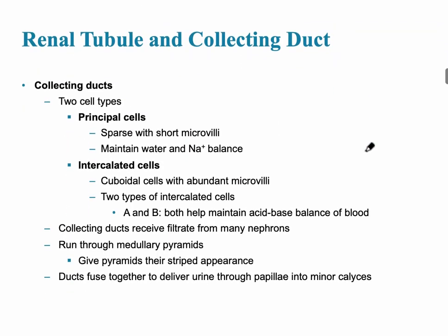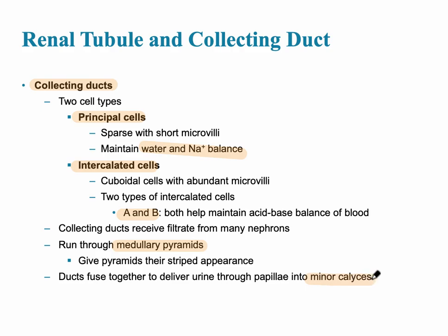The collecting duct has two specific cell types: principal cells and intercalated cells. The principal cells maintain water and sodium balance. The intercalated cells are cuboidal and have two main types — A and B cells — which play a role in acid-base balance. The collecting ducts run through the medullary pyramids, leading to the minor calyx.